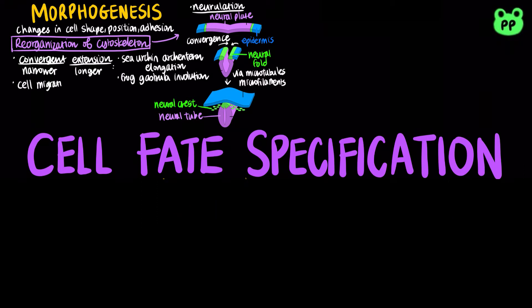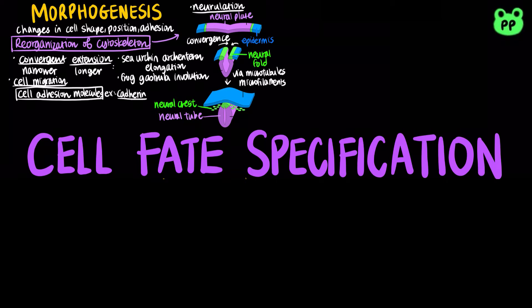Cell adhesion molecules located on cell surfaces contribute to cell migration and stable tissue structure, such as cadherins, which are important in the formation of frog blastula. The extracellular matrix also helps guide cell movement.